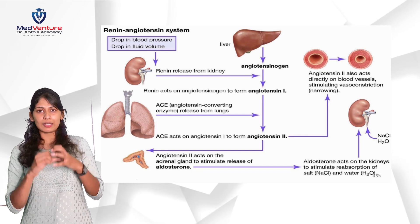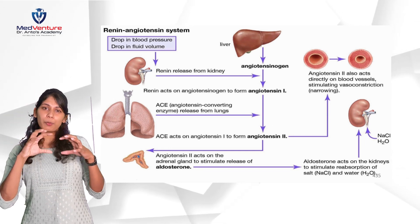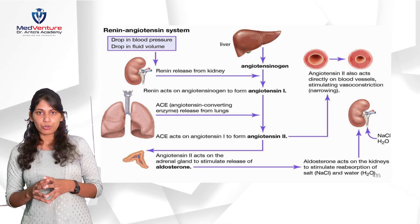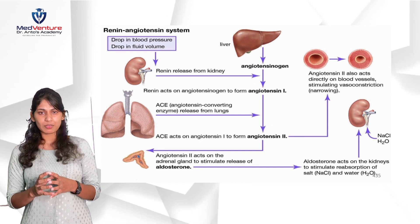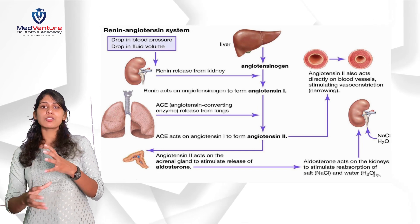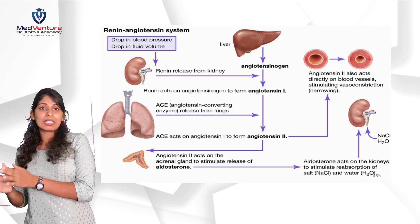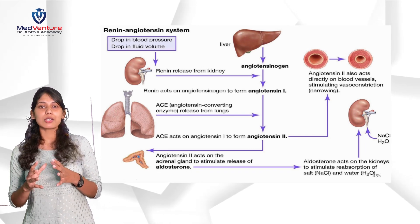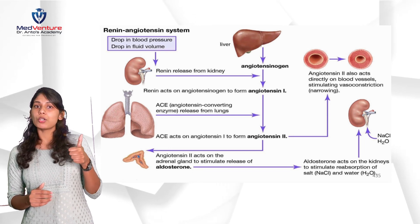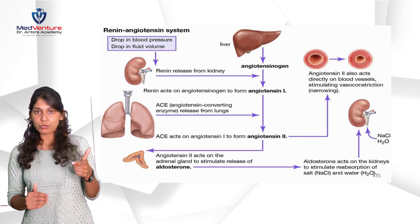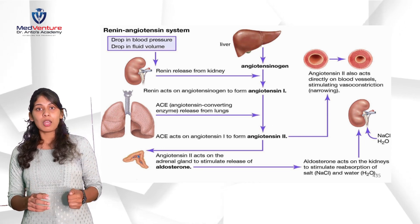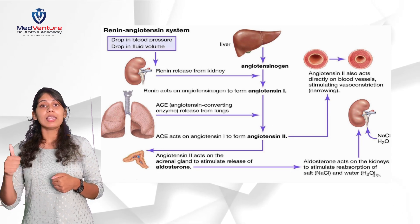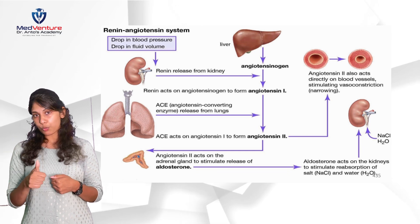Secondly, angiotensin 2 acts on the adrenal gland, which sits like a small cap on top of the kidneys. It releases aldosterone, a mineralocorticoid. Mineralocorticoids increase reabsorption of salt and water (NaCl and H₂O), leading to increased blood volume and thereby increased blood pressure. So, as a whole: kidneys produce renin, liver produces angiotensinogen, lungs provide ACE, angiotensin 2 causes vasoconstriction, and adrenal gland releases aldosterone to raise blood volume and pressure.